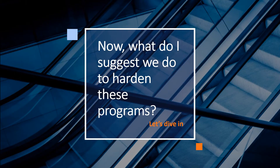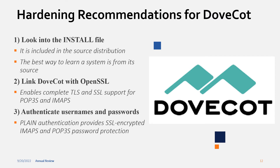For hardening suggestions: first, look into the install file because this is where the source code lies and it's the best way to learn from the source. However, it's also the most risky — you could cause disruptions or catastrophes if you don't know how to manage the source code well, so do your research first. Next, link Dovecot with OpenSSL — that's where it enables complete TLS and SSL transport for POP3S and allows you to establish a self-signed certificate. Afterwards, use the plain authentication provided for Dovecot to authenticate all usernames and passwords to protect your systems.